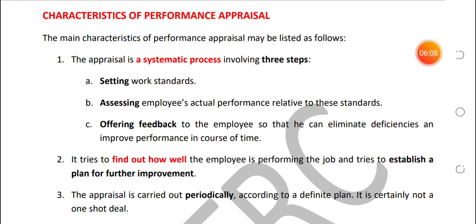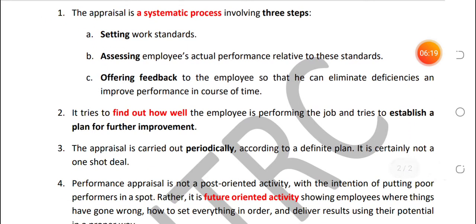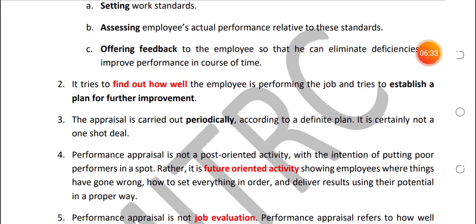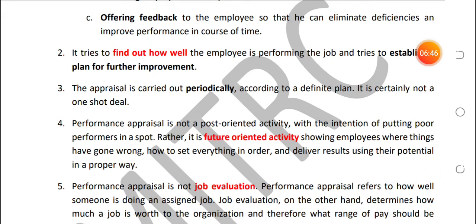Next, characteristics of Performance Appraisal. First: the appraisal is a systematic process involving three steps. Step one: setting work standards — pehle objective set kiye jaate hain. Step two: employee ki actual performance ka assessment kiya jaata hai aur standards ke saath compare kiya jaata hai. Step three: subordinate ko feedback diya jaata hai, taaki agar koi deficiency aa rahi hai — yani actual performance standards se kam hai — toh woh time rahte use improve kar sake.